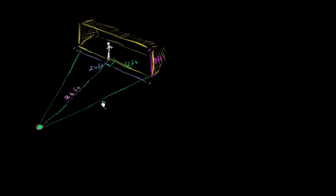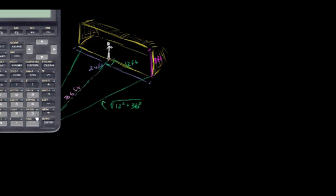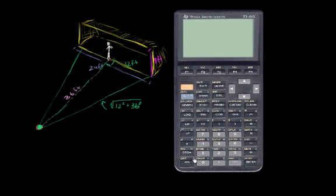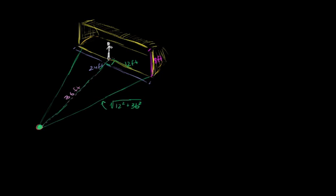The Pythagorean theorem tells us that this distance right over here is going to be the square root of the sum of the squares of the other sides. So it's going to be the square root of 12 squared plus 36 squared. Let's get our calculator out. The square root of 12 squared plus 36 squared is equal to 37.9 — we could say 37.95, almost 38 feet. So this is approximately equal to 37.95 feet.